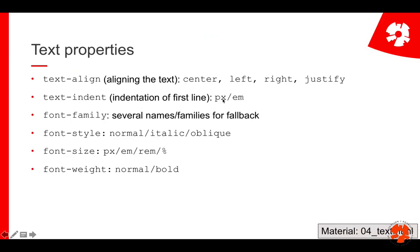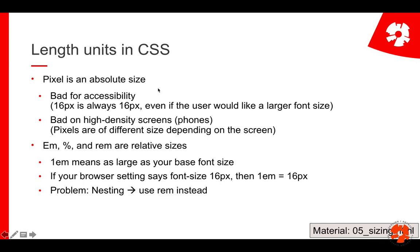Now you've seen the length units: pixel, em, rem, percent. Those are different units for defining size or space. The important thing is that there are absolute and relative sizes. Pixel is an absolute size — it's always 16 pixels if I declare that. This is really bad for accessibility, because it's 16 pixels no matter whether you have a 60-inch screen or a tiny smartphone. And if the user sets a larger font size in the browser, 16 pixels is not a good choice.